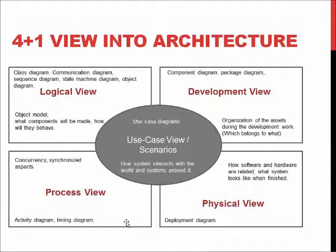The process view describes the concurrency and synchronized aspects in the software, and not only in the software but also in the process of using software or doing things. This means the process view tells us how components or objects are communicating with each other and in what order things happen, including aspects beyond software — for example, using an online store to order something and all the concurrent activities happening in the warehouse, logistics system, sales and billing, and the store itself.